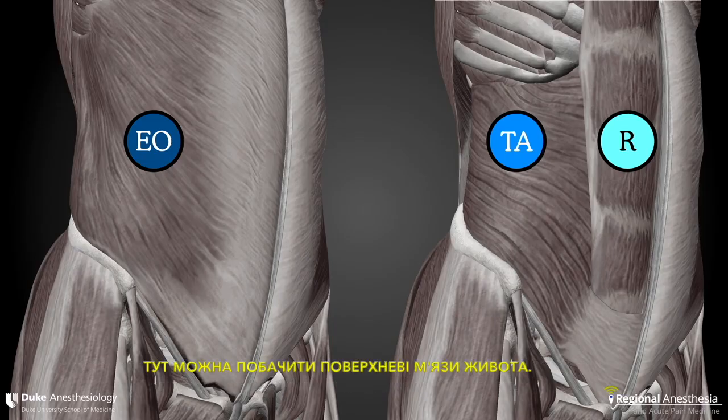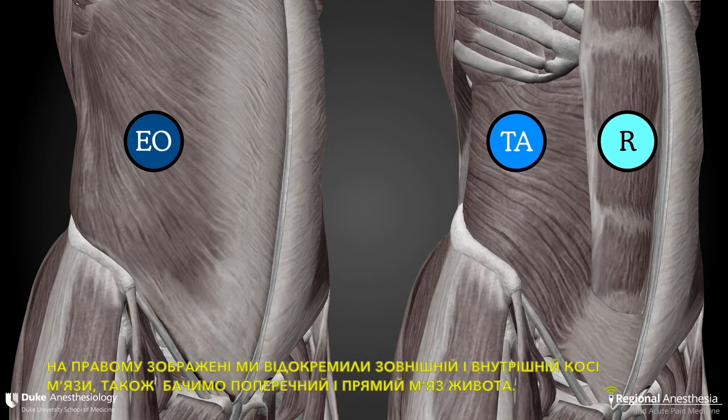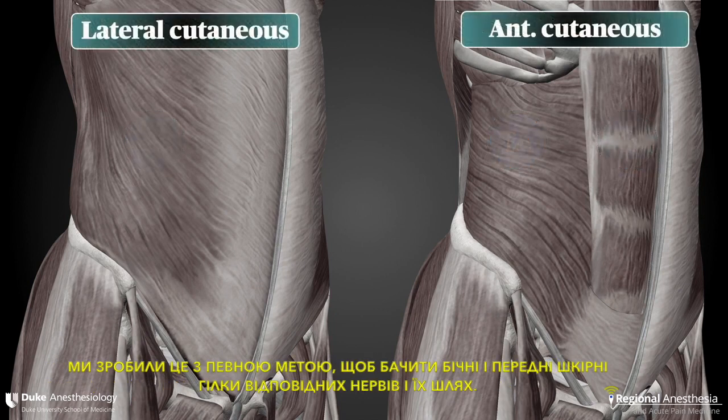Here we see the superficial muscles of the abdomen. On the left, the external oblique and its aponeurosis cover the entire lateral abdominal wall. On the right, we've peeled away the external and internal obliques and we can see the transversus abdominis and rectus abdominis muscles. We've done this with a purpose so we can see both the lateral and anterior cutaneous branches of the relevant nerves and where they travel.